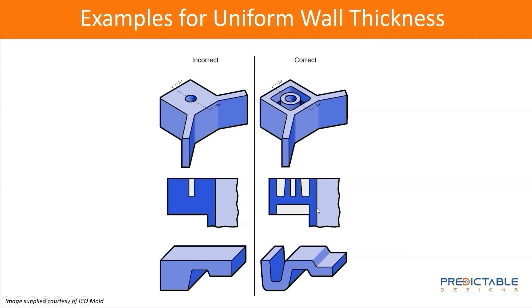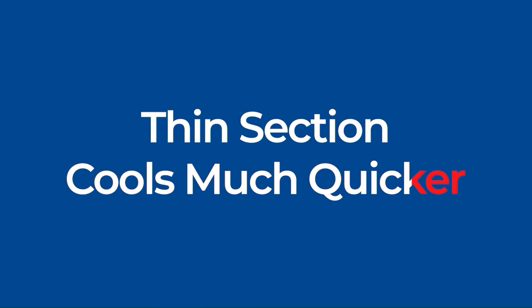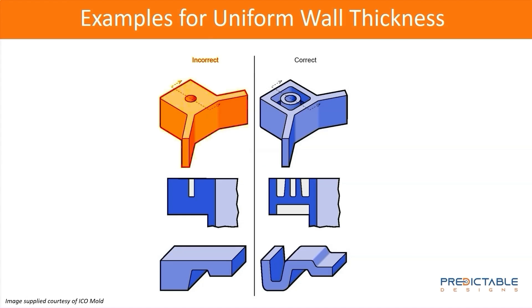You need to have uniform wall thickness. Here are a couple examples. This first example shows the boss areas have a much thicker section here. That's not how you want to design because you've got thin walls here and a thicker section here. The main issue is what happens when you have a thin section and a thick section is the thin section cools much quicker than the thick section does. This creates a temperature differential between the thick sections and the thin sections, and that temperature differential causes the plastic to warp. That's obviously not desirable.